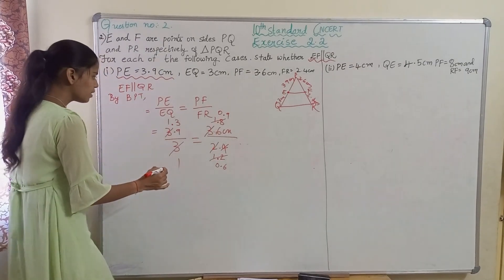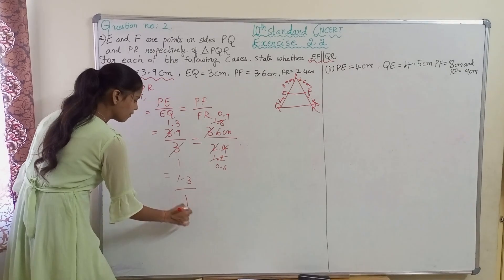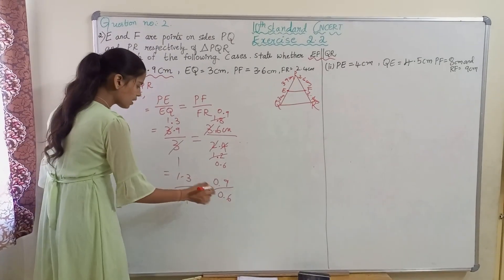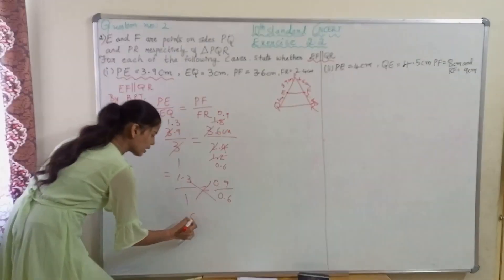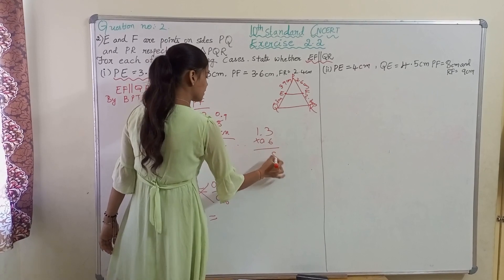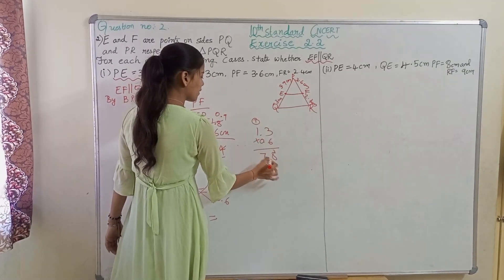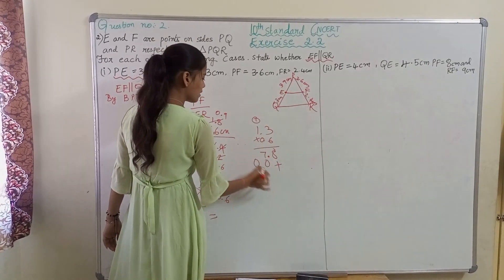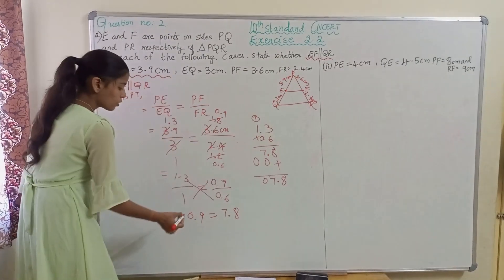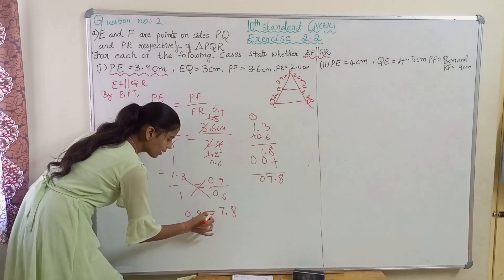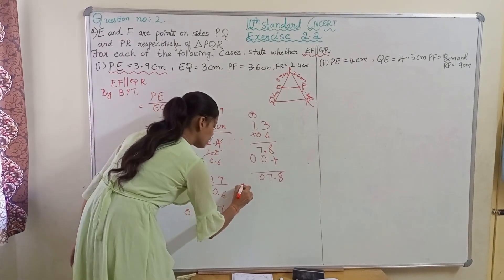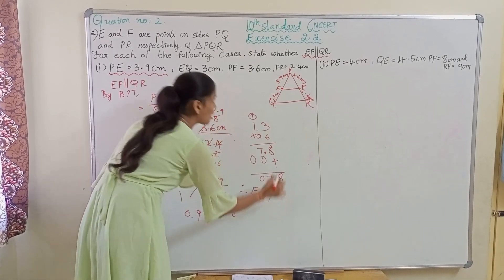So this simplifies to 1.3 by 1, which will be equal to 0.9 by 0.6. When we cross-multiply: 1 into 0.9 is 0.9, and 1.3 into 0.6 gives 7.8. So 0.9 is not equal to 7.8. Since these values are not the same, therefore in this case EF is not parallel to QR.